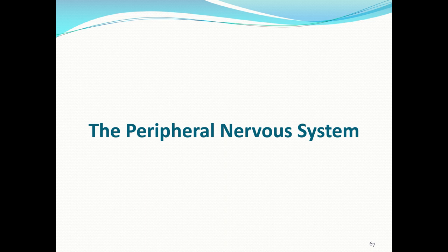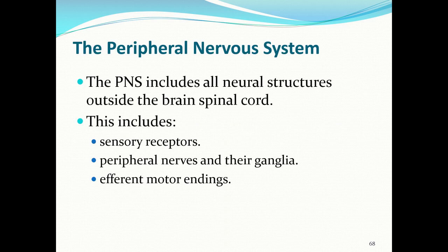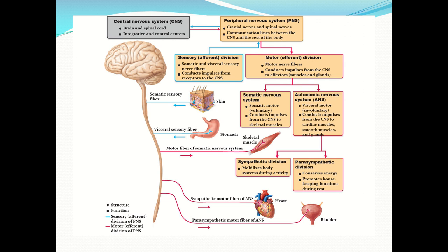The peripheral nervous system connects neural structures outside the brain and spinal cord, including sensory receptors, peripheral nerves and their ganglia, and efferent motor endings. The sensory division is afferent (approaching the CNS) and the motor division is efferent (away from the CNS). Motor nerve fibers connect to the somatic nervous system (skeletal muscles) and the autonomic nervous system (cardiac muscle, smooth muscle, and glands), which is further divided into the sympathetic (fight or flight) and parasympathetic (rest and digest) divisions.